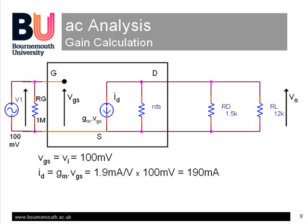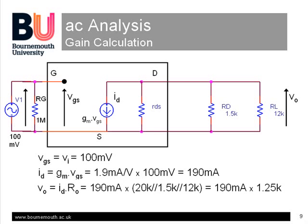This drain current then passes through the three resistances RDS, RD and RL. If we know the JFET output resistance RDS, let's say it's 20 kilo ohms for example, we can include it to give a total load resistance, in this case of 1.25 kilo ohms, and an output voltage of 240 millivolts. This is an overall voltage gain for the stage of 240 millivolts output for 100 millivolts input or a gain of 2.4.